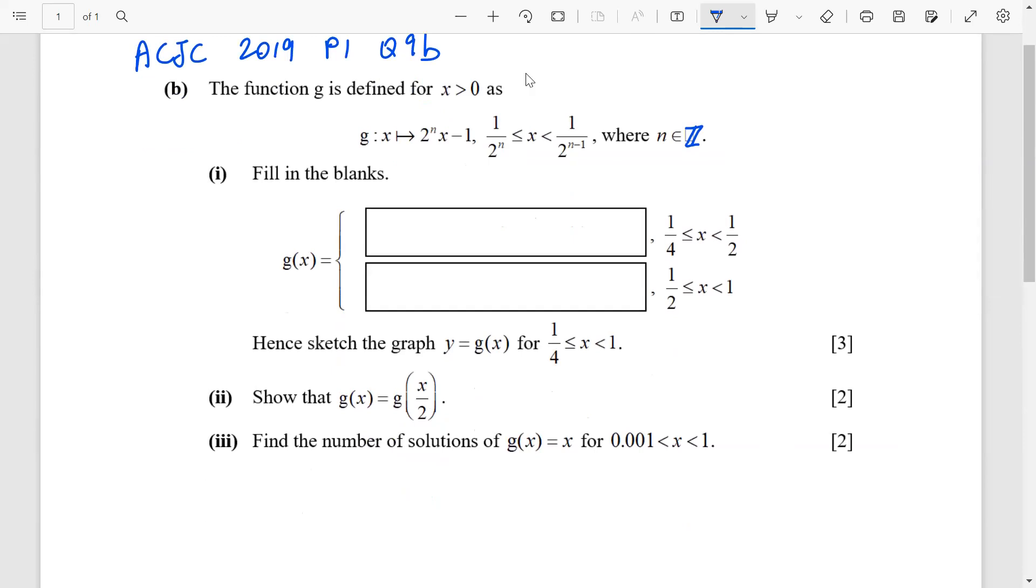Function g is defined for x greater than 0. They give you this, and n is an integer. So fill in the blank. For this part, you can see that n equals 2, so it's like 2 squared and 2 power 1. This is where n equals 1, so 2 power 1, 2 power 0. Because it's 2 squared, here you get 4x minus 1. You get 2x minus 1. This is straightforward.